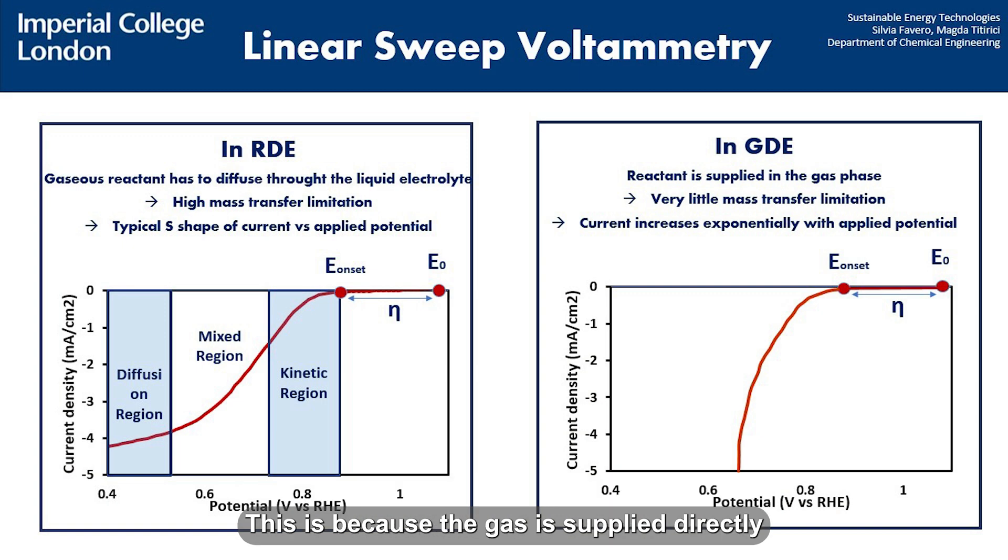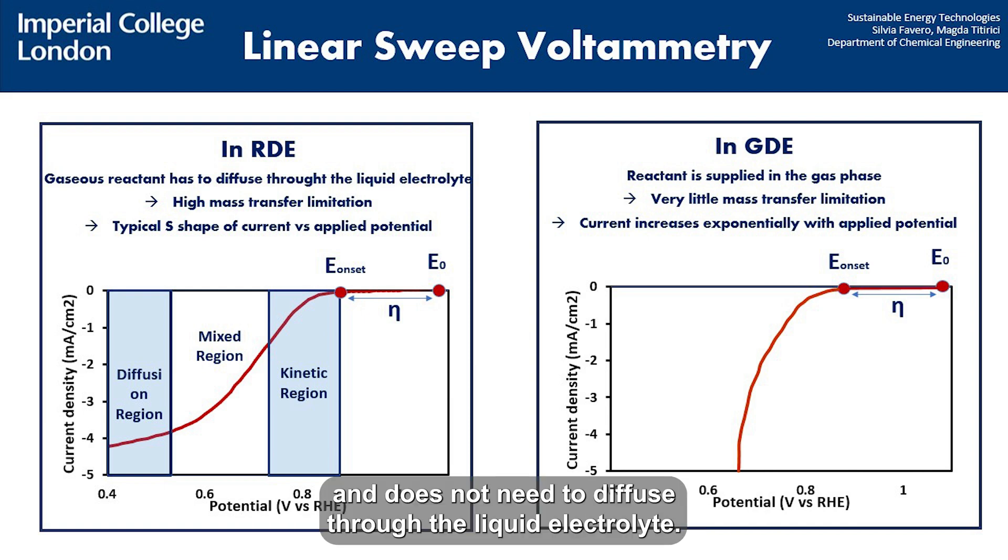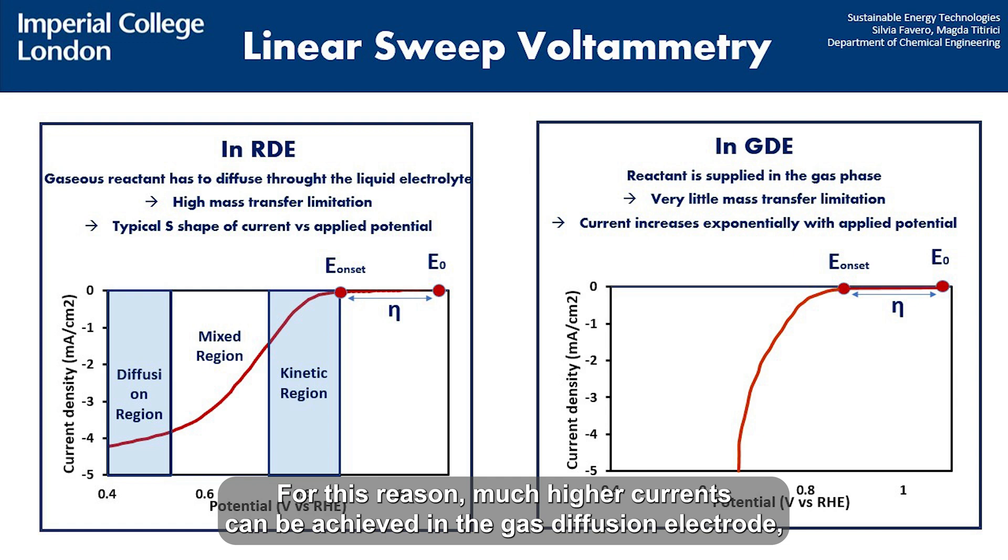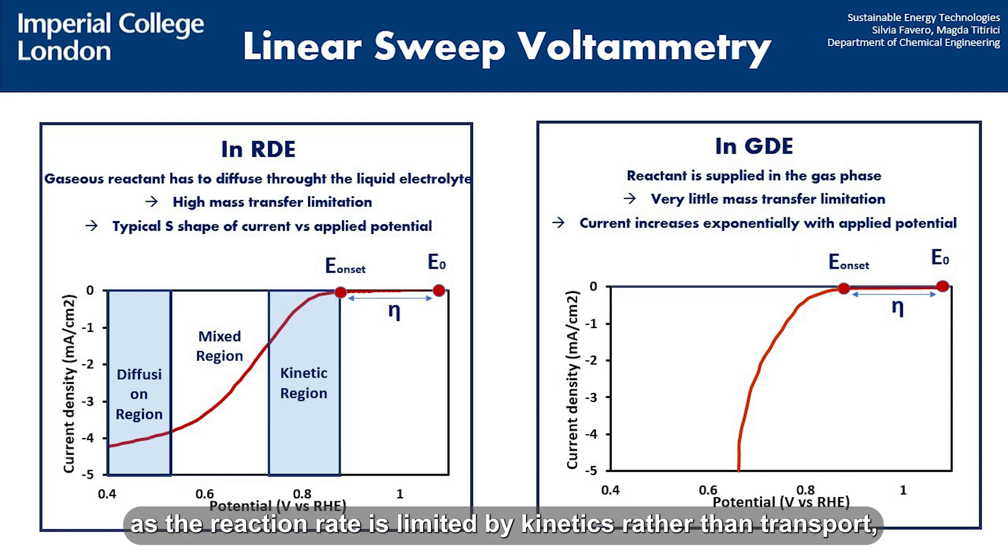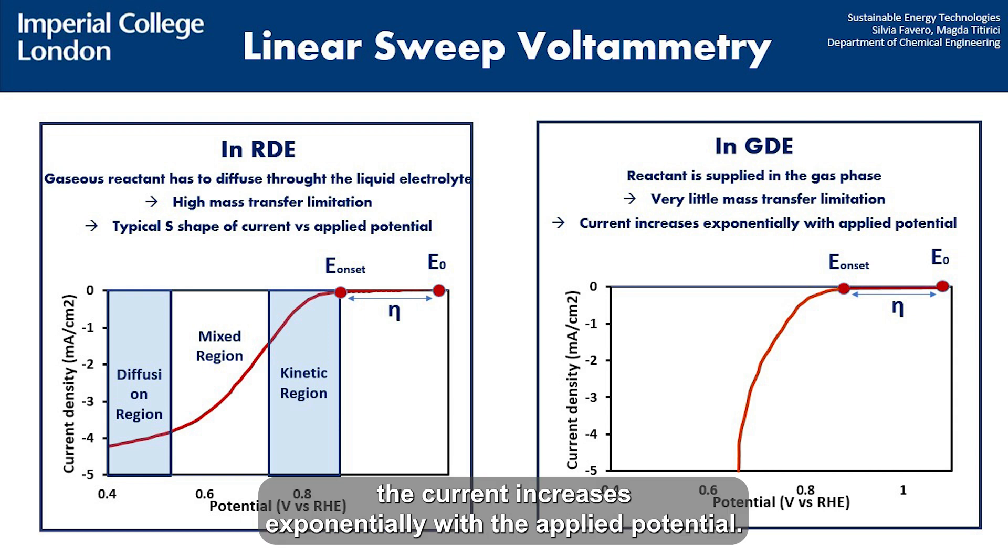This is because the gas is supplied directly and does not need to diffuse through the liquid electrolyte. For this reason, much higher currents can be achieved in the gas diffusion electrode compared to the rotating disk electrode, as the reaction rate is limited by kinetics rather than transport. For the same reason, the current increases exponentially with the applied potential.